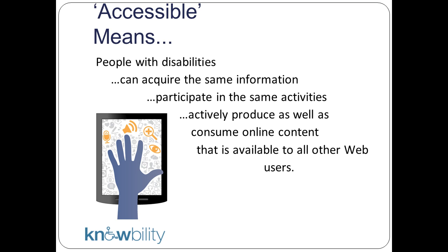So talking about accessibility — what does accessibility mean? I hear a lot of people say the web is accessible because I can access it at any time, anywhere. But really what you want to be asking is: can it be accessed by everyone? We often talk about accessibility in terms of adherence to standards, but it's good to remember that accessibility is about inclusive design for real people with human needs so that they can produce and consume content just like everyone else.